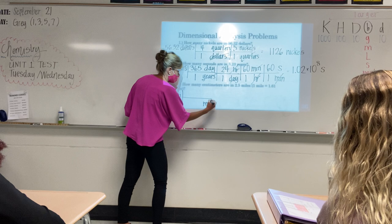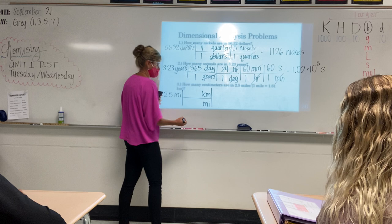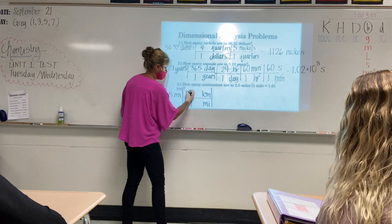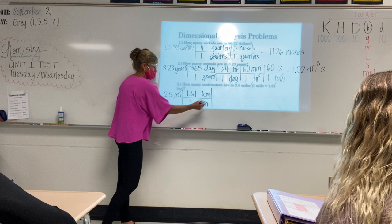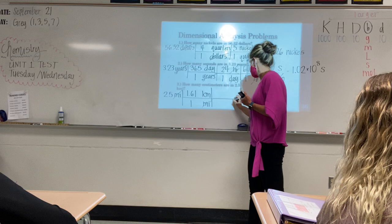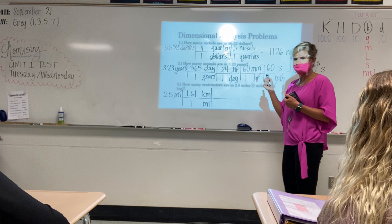We have miles on top — where's miles going to go next? On the bottom. We're going to go to kilometers because that's what was provided. It tells me one mile is equal to 1.61 kilometers. Miles cancels. I'm at kilometers — but hey, I'm a master at metric conversions now, so I know how to do that.